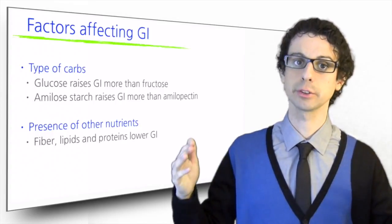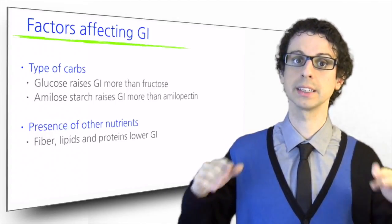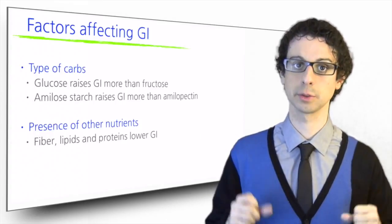As for other nutrients, the presence of fiber, proteins, and lipids slows down gastric emptying and intestinal absorption of glucose, thus lowering the glycemic index of a food.